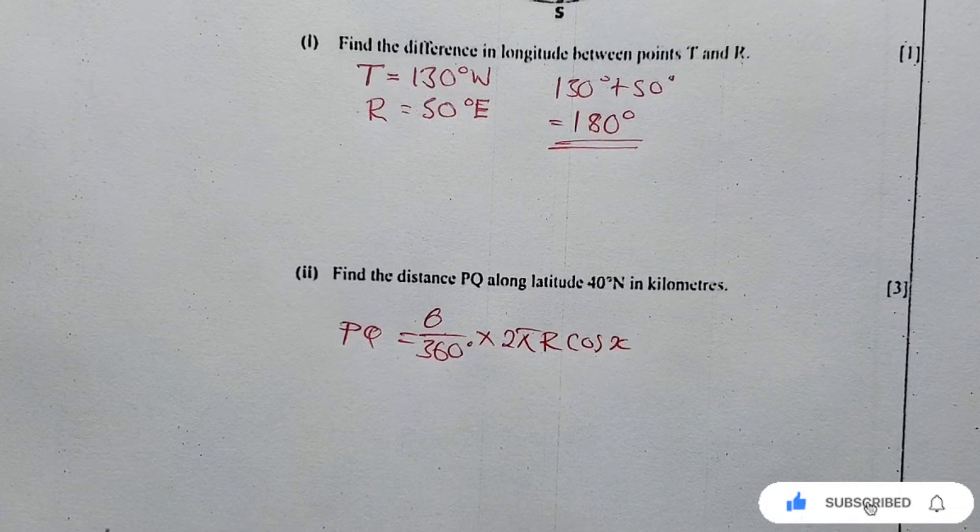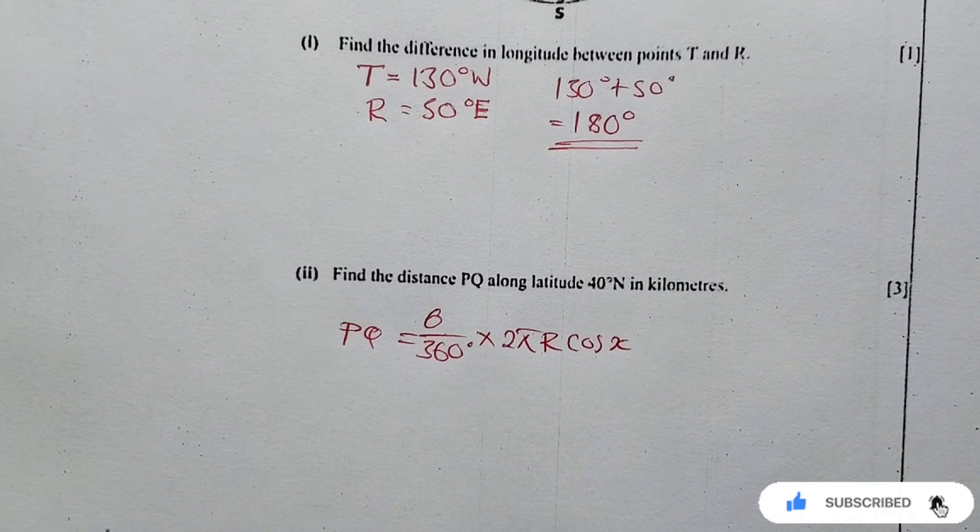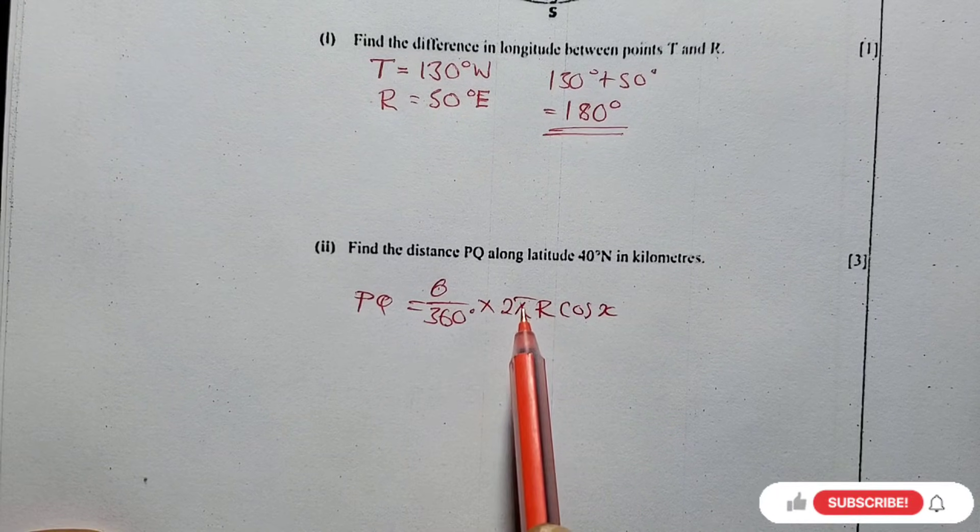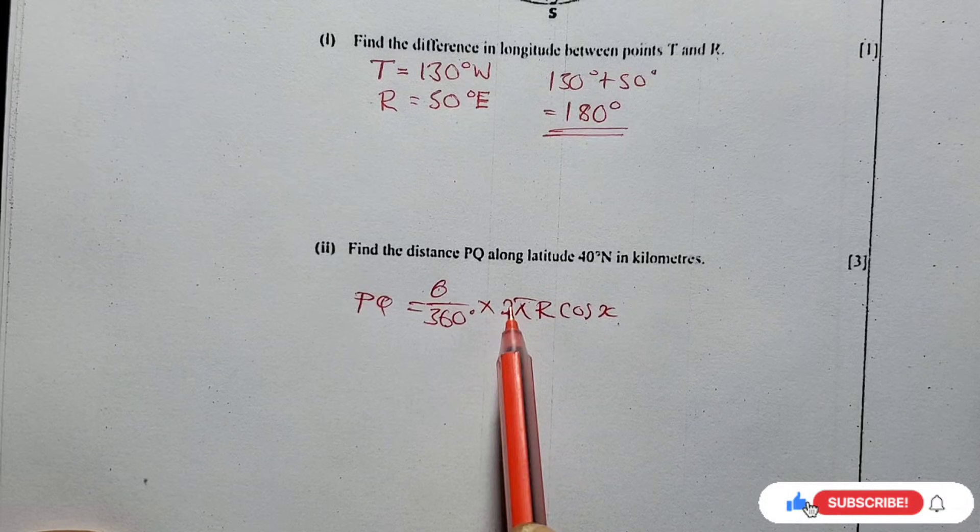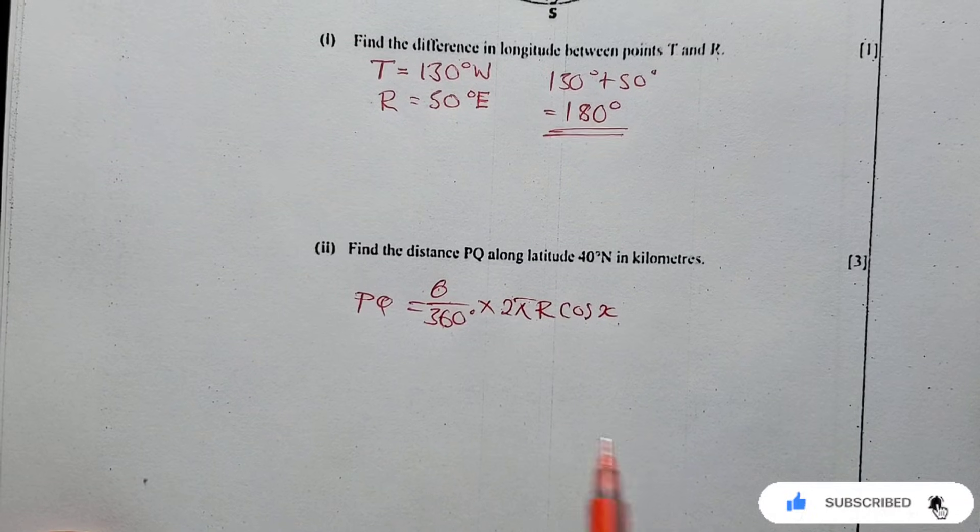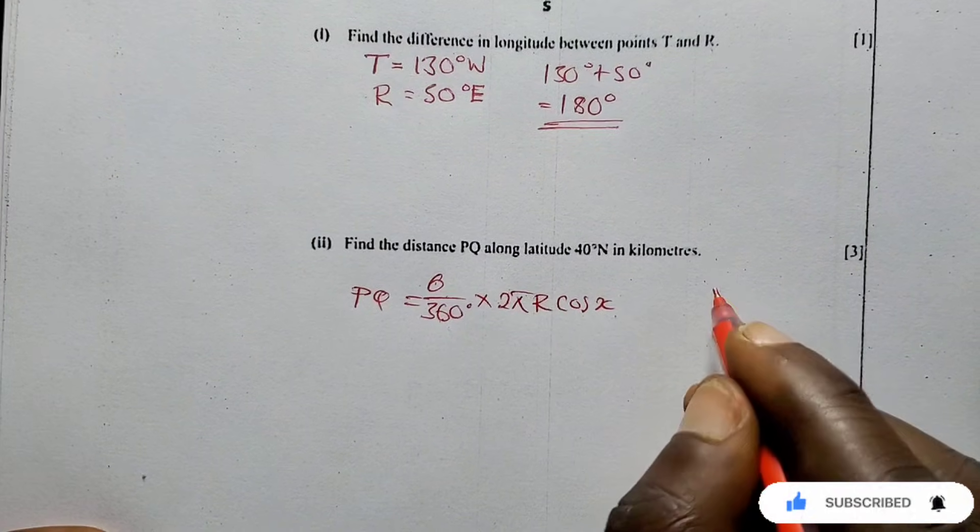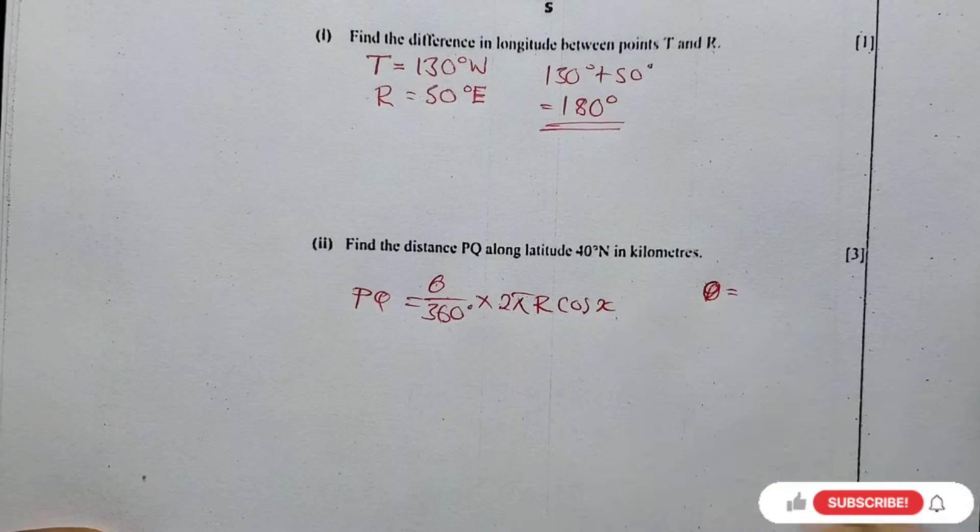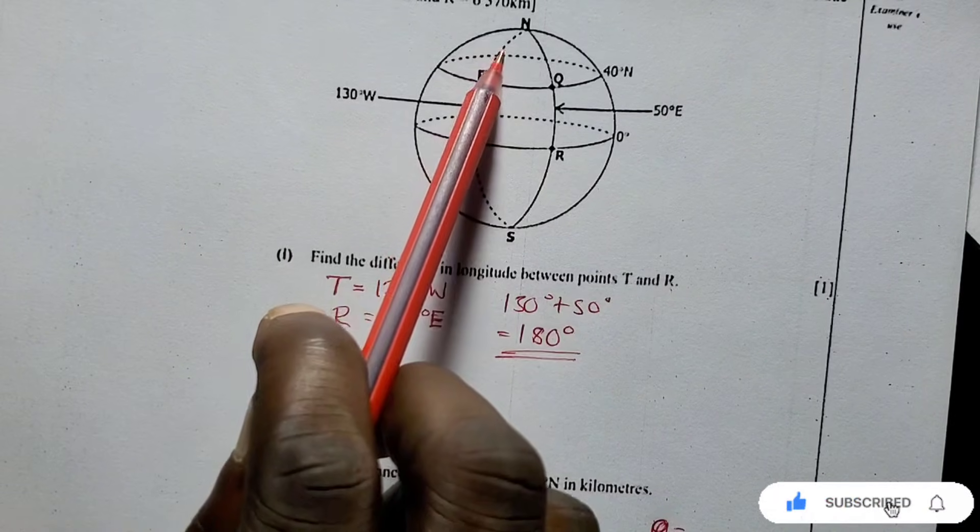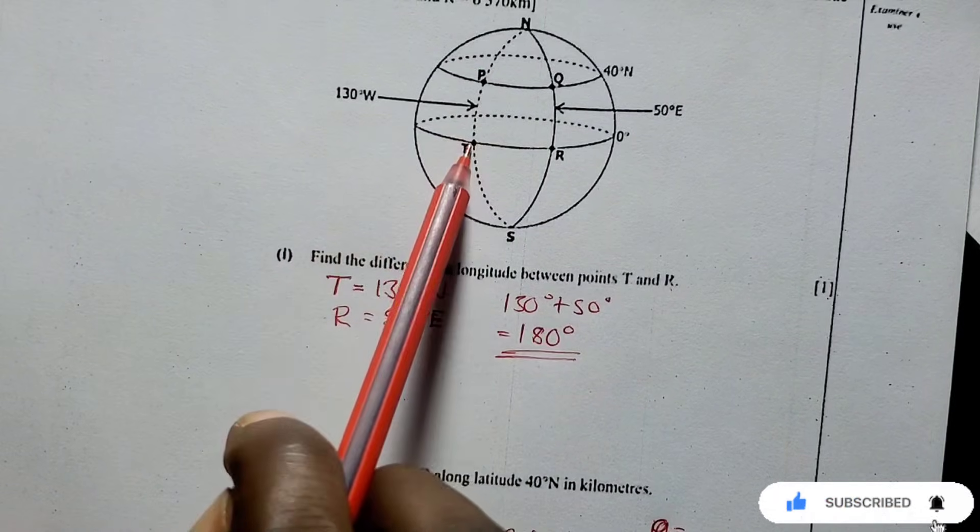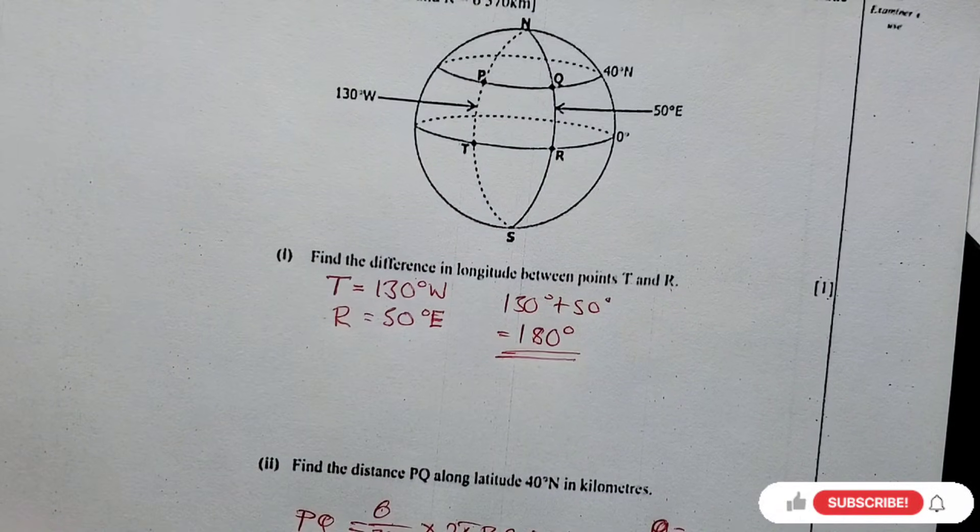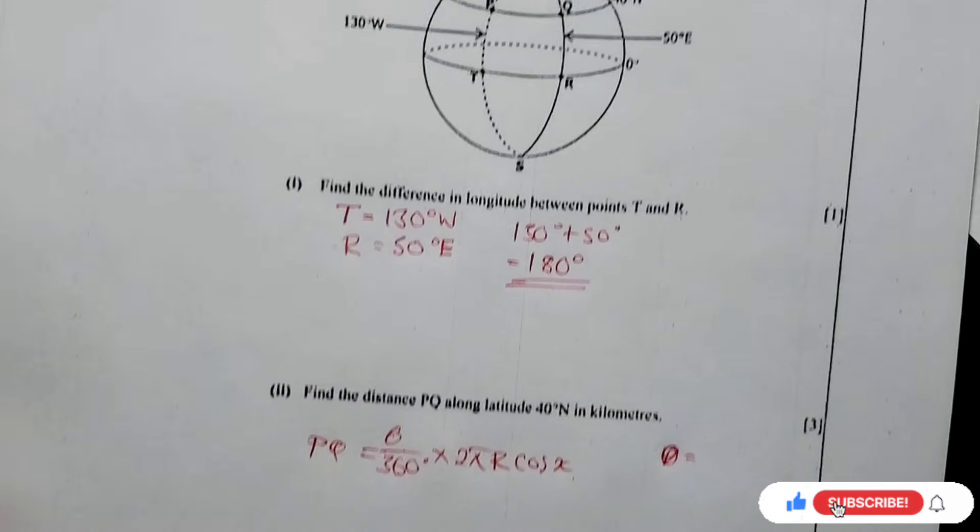Some of you may be knowing that formula where you have theta over 180 times πR cos x. It's the same thing, because you're going to divide two here, one to here is 180. Now what is the theta? The theta here is the difference in longitude between P and Q. You've noticed that P and Q, T and R, are on the same longitude, so the 180 is just the same difference in longitude.